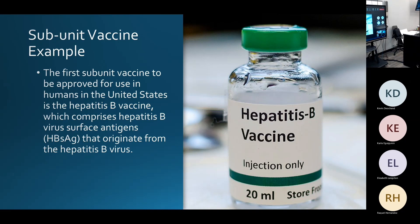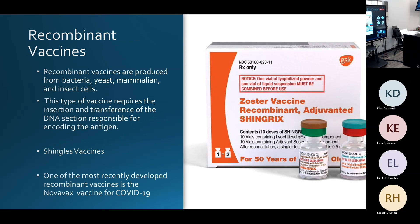Moving on to recombinant vaccines — these are produced from bacteria, yeast, mammalian, and insect cells. This type of vaccine requires the insertion and transference of DNA sections responsible for encoding the antigen. Examples used today include shingles vaccines, and more recently the Novavax vaccine for COVID-19.